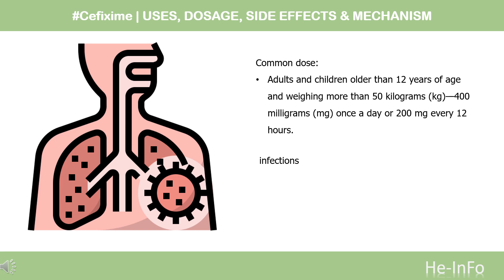Dose. For oral dosage forms — capsules, suspension, chewable tablets, or tablets. For infections: Adults and children older than 12 years of age and weighing more than 50 kg: 400 mg once a day or 200 mg every 12 hours. Children 6 months to 12 years of age: dose is based on body weight and must be determined by your doctor. The dose is usually 8 mg per kg of body weight per day, taken as a single dose or divided into two doses of 4 mg per kg of body weight every 12 hours. Children up to 6 months of age: use and dose must be determined by your doctor.